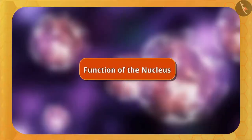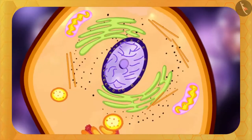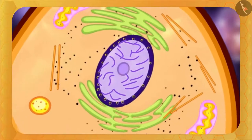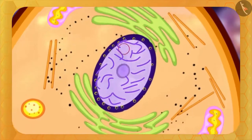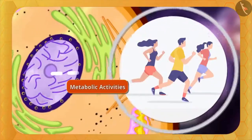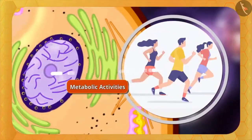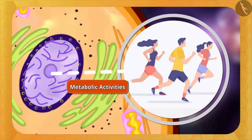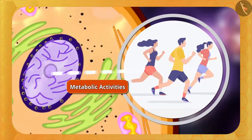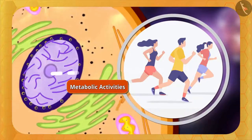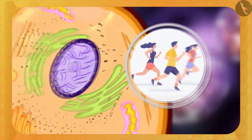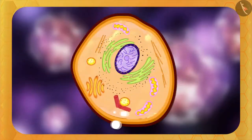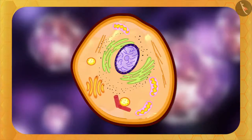Now, do these nuclear pores allow the passage of nucleoplasm into cytoplasm? Yes, they do, and the nucleus and the cytoplasm together are called protoplasm. Apart from this, you can also notice a spherical part in the center of the nucleus, which is called the nucleolus. Now we will understand about the function of the nucleus. The nucleus is the headquarter of the cell, which controls and directs all metabolic activities such as production of energy. It determines the overall growth and maturity of the cell.